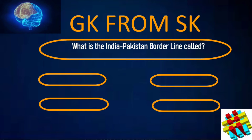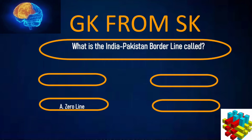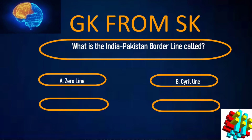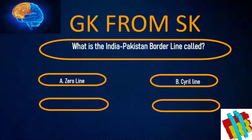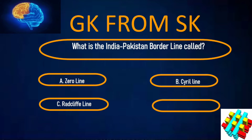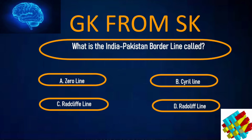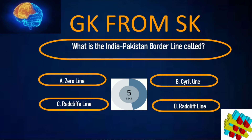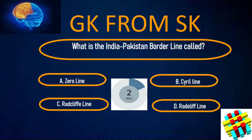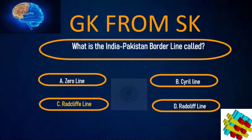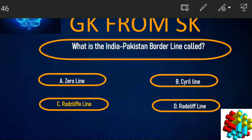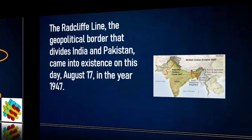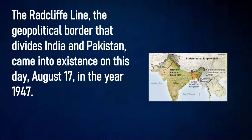What is the India-Pakistan borderline called? A. Zero Line, B. Cyril Line, C. Radcliffe Line, D. None of the above. Your time starts now. Correct answer: Radcliffe Line. The geopolitical border that divides India and Pakistan came into existence on August 17, 1947.